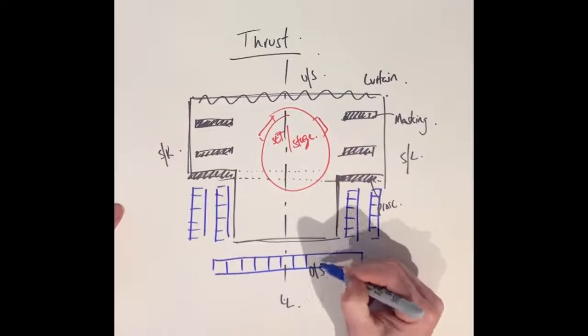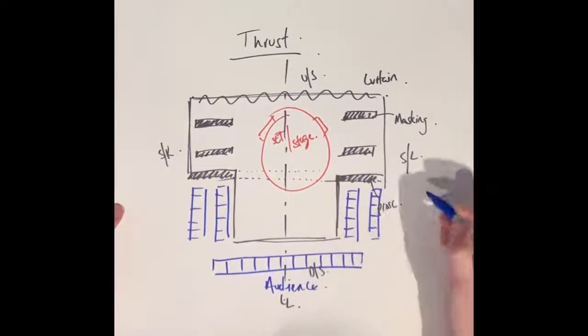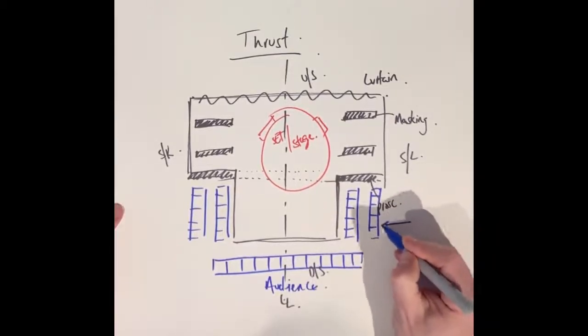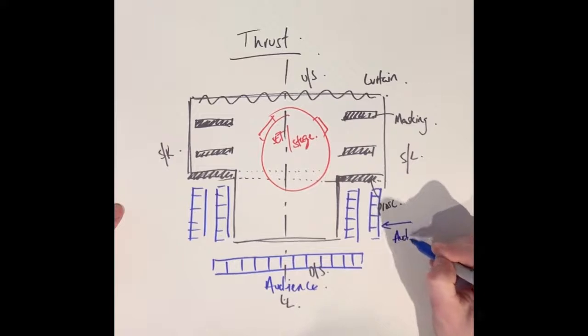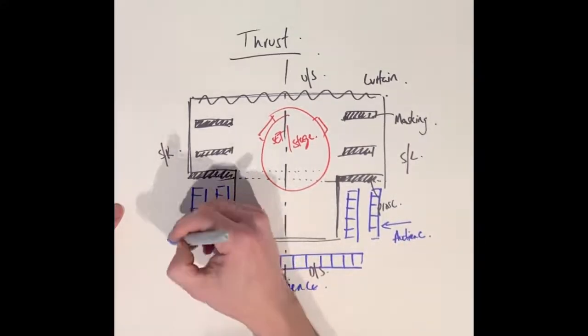And also because it's thrust I will have audience front on to the performance space. Here I'm just labeling and now adding in arrows to show which way the audience will be facing the production.